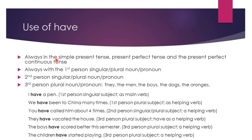Here are a few examples. 'I have a pen' — 'have' is the main verb, used with the first person singular 'I.' 'We have been to China' — present perfect tense, 'have' has been used as a helping verb with first person plural. 'You have called him about four times' — 'have' is again a helping verb here, in the present perfect tense, and the subject is second person singular or plural 'you'.